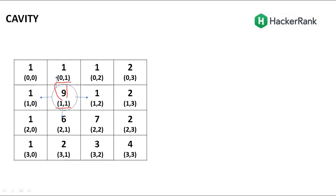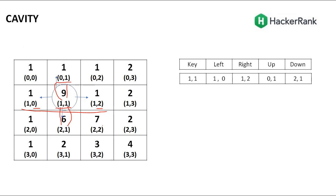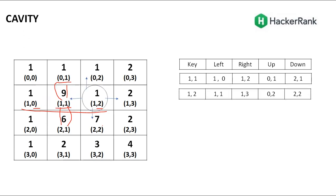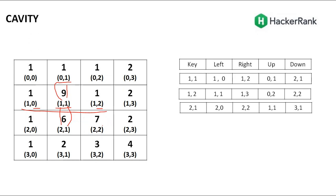Based on the index pattern, you can write down the left, right, up, and down positions for any cell. Observe how these change based on the index of the key cell. Once you can generate the indexes, you can always access the values, and once you can access the values, you can use them for comparison.